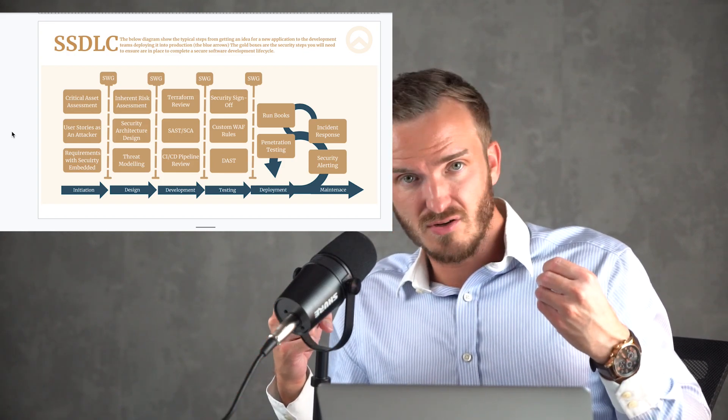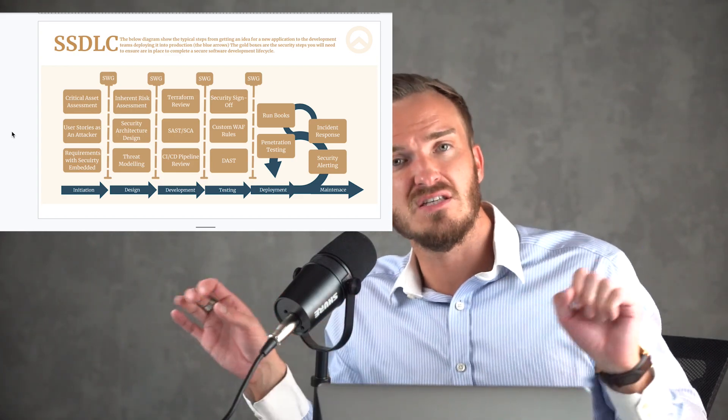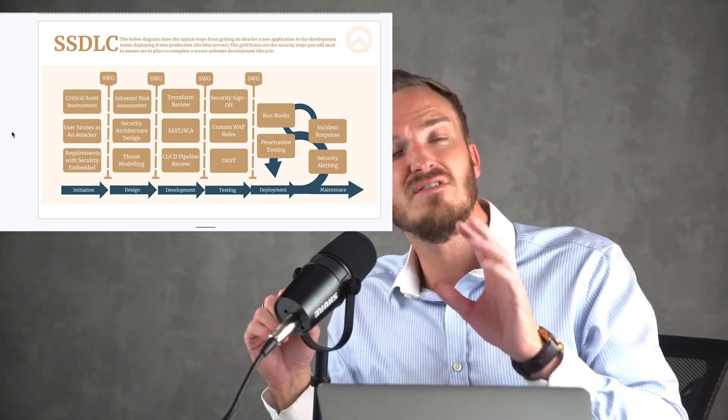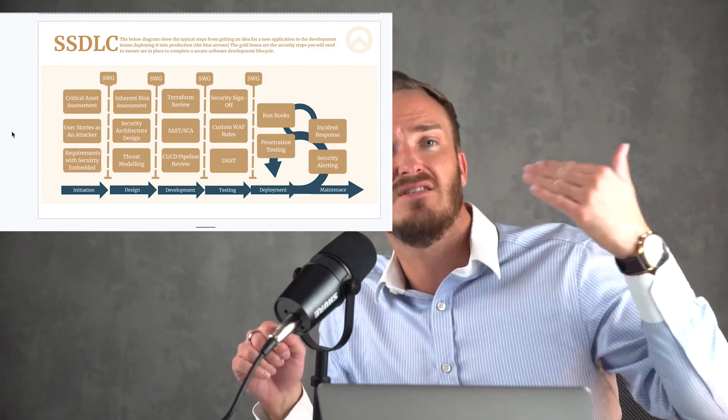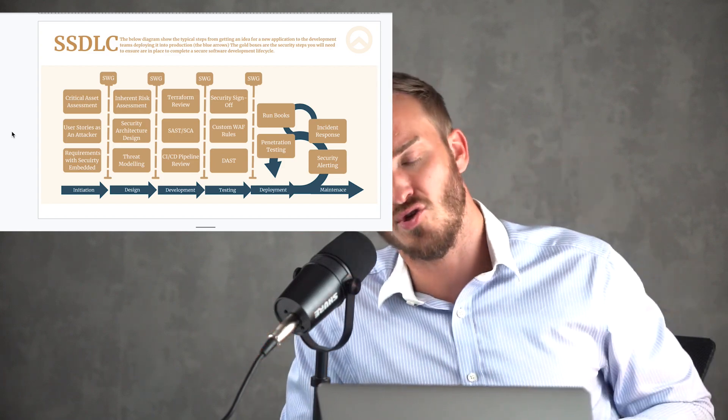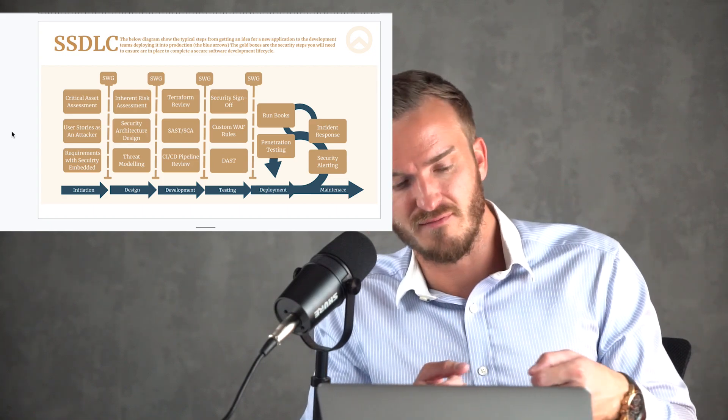But this doesn't look the same at every organization. What I first do is I map out what the SDLC looks like at different companies and different teams, and then I'll integrate security practices as part of that and then turn that into a Secure Software Development Lifecycle. So it's kind of like a lens that you put over the top of the SDLC.